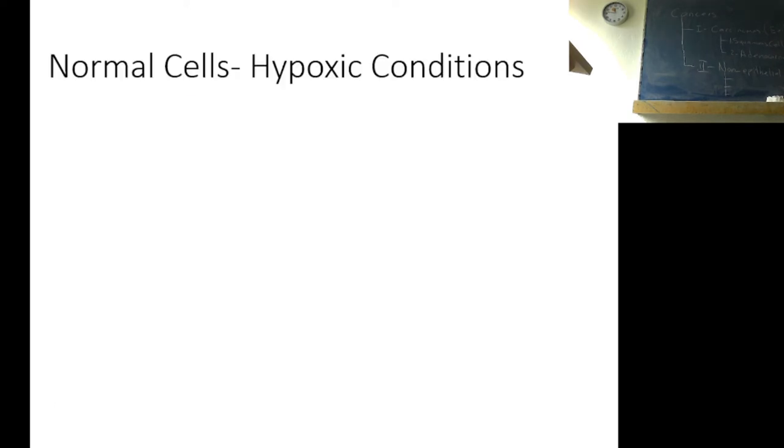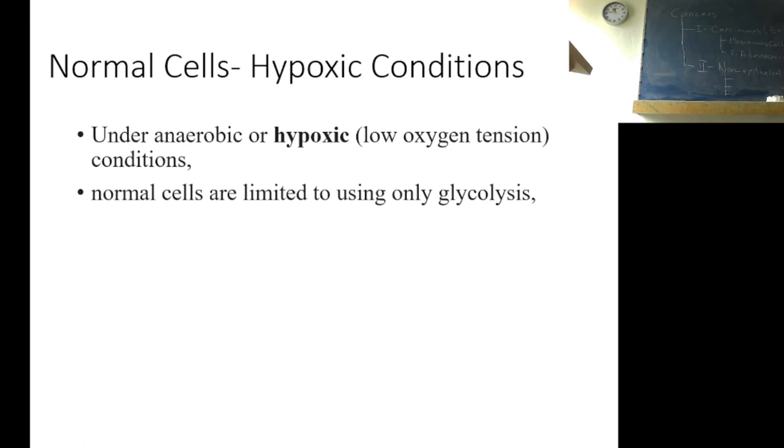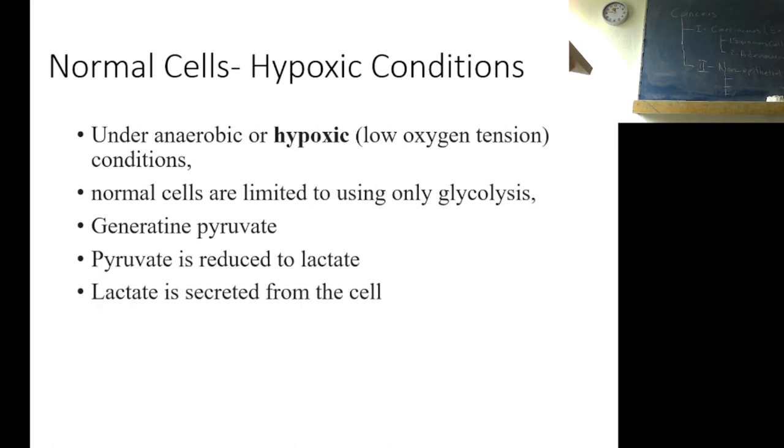Normal cells under hypoxic conditions. Under anaerobic or hypoxic low oxygen conditions, normal cells are limited to using only glycolysis, generate pyruvate. Pyruvate is reduced to lactate, and lactate is secreted from the cell.